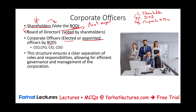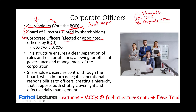The board of directors — they don't work for the company, they oversee the whole process. The corporate officers are the actual agents. So the shareholders exercise control through the board; they can vote whoever they want, including themselves, who in turn delegate the operational responsibility to the officers.